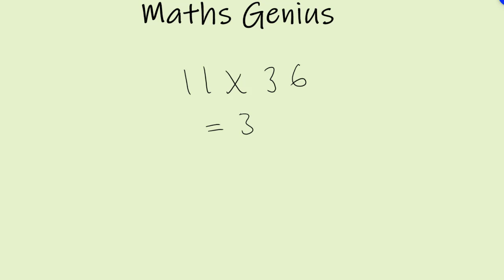Here's another one. Oh, you got the answer already? 396. Okay, brilliant. So you're adding these two numbers and placing it in between these two digits.